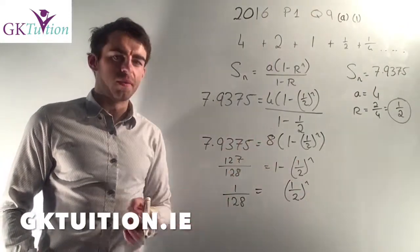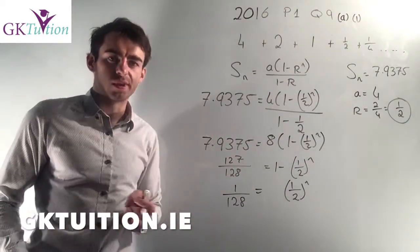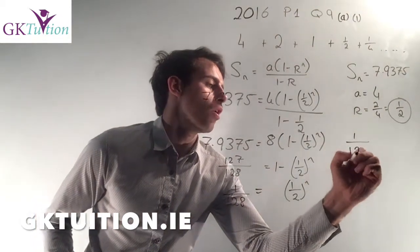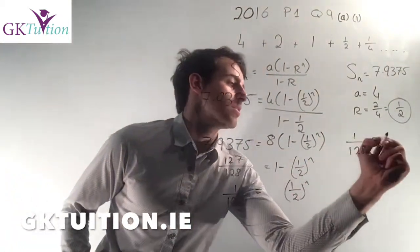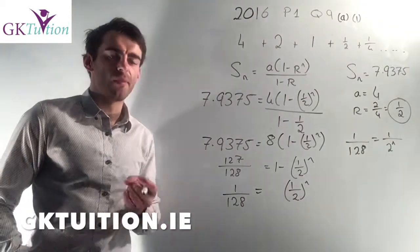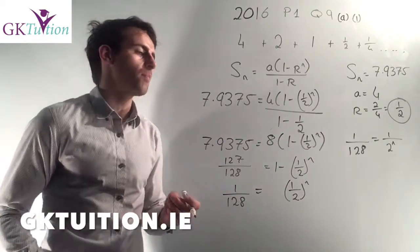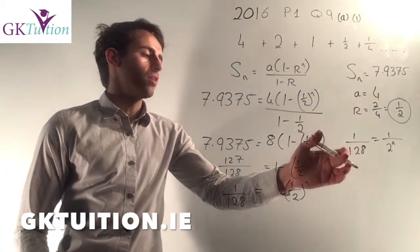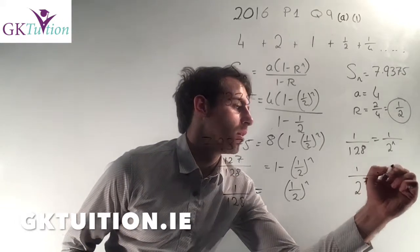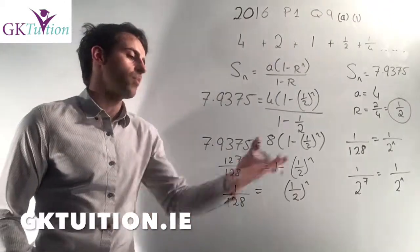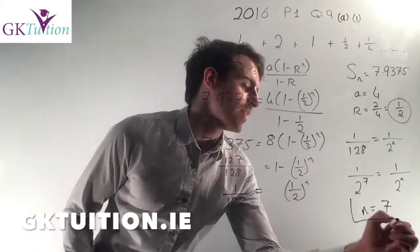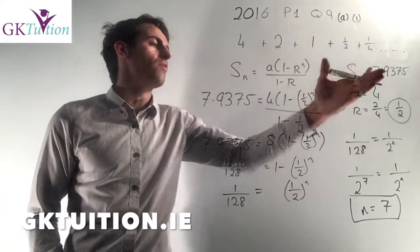Your unknown is in the power, so your inclination would be to introduce logs — and you can use logs to solve this. But there's actually a much easier way. I have 1 over 128, and a half to the power of N is the same as 1 over 2 to the power of N. You should recognize that 128 is a power of 2 — in fact 128 is 2 to the power of 7. So I now have 1 over 2 to the power of 7 equals 1 over 2 to the power of N, which clearly means that N is equal to 7. After 7 stages the sum of all the terms will be 7.9375.